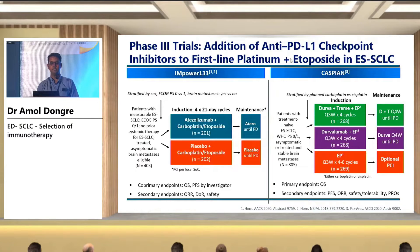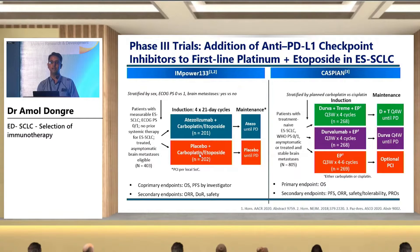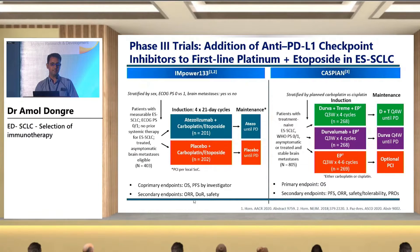In IMpower 133, patients with measurable extensive stage SCLC with ECOG performance status 0 to 1, no prior systemic therapy, and asymptomatic brain metastasis were randomized into Arm 1: atezolizumab plus carboplatin/etoposide, and Arm 2: placebo plus carboplatin/etoposide. Patients received induction therapy for four cycles every three weeks, followed by maintenance atezolizumab in Arm A and placebo in Arm B until disease progression. The primary endpoint is overall survival and PFS by investigators; secondary endpoints are overall response rate, duration of response, and safety.